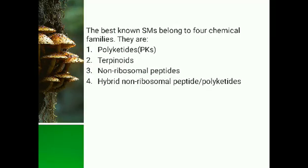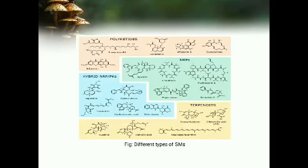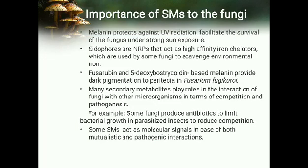They can be divided into four categories: polyketides, terpenoids, non-ribosomal peptides, and hybrid non-ribosomal peptides or polyketides. Here are some structures of different types of secondary metabolites.